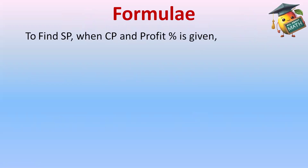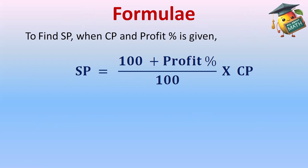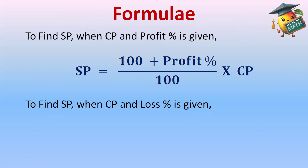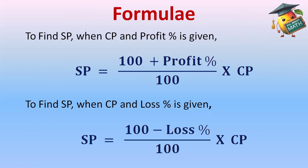The formula to find selling price when cost price and profit percent is given: Selling Price = (100 + Profit%) / 100 × Cost Price. When loss percent is given, the formula is: Selling Price = (100 - Loss%) / 100 × Cost Price. To remember: profit percent is added in the numerator, and loss percent is subtracted in the numerator.